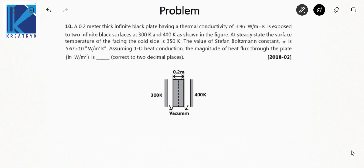A 0.2 meter thick infinite black plate having a thermal conductivity of 3.96 Watt per meter Kelvin is exposed to two infinite black surfaces. The temperatures of the surfaces are given as 300 Kelvin and 400 Kelvin. At steady state, the surface temperature of the plate facing the cold side is 350 Kelvin. The value of the Stefan-Boltzmann constant is given. Assuming 1D heat conduction, find the magnitude of heat flux through the plate in Watt per meter square.